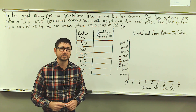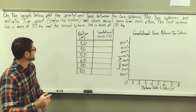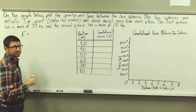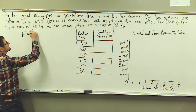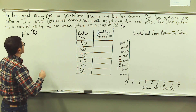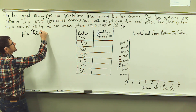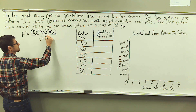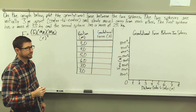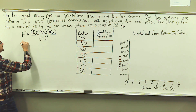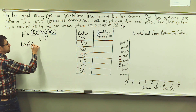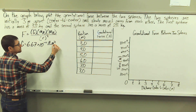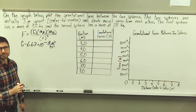We're going to use the law of universal gravitation. The equation is F, which is the force of gravitational attraction between the two objects. This is going to be the gravitational constant times mass A times mass B divided by the center-to-center distance squared. G, our constant, is equal to 6.67 times 10 to the negative 11th, with units of newton meters squared per kilogram squared.